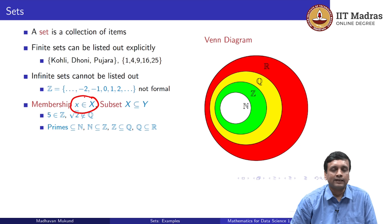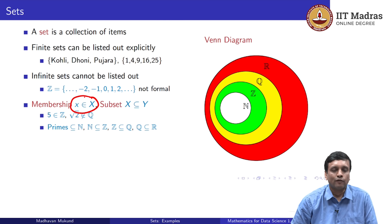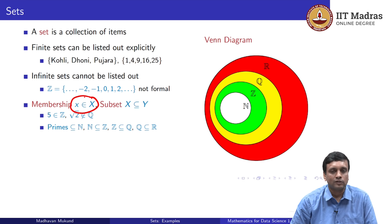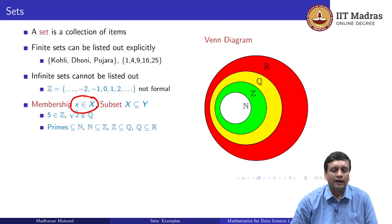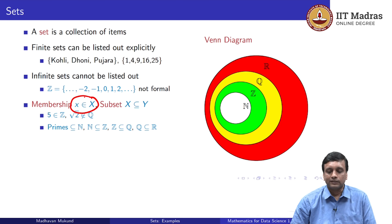Subset, on the other hand, says that one set is included in another set — everything that belongs to X also belongs to Y. For instance, all the prime numbers are natural numbers, so the primes are a subset of the naturals. Every natural number is an integer, so the naturals are a subset of the integers. Similarly, the integers are a subset of the rationals, and the rationals are a subset of the reals.